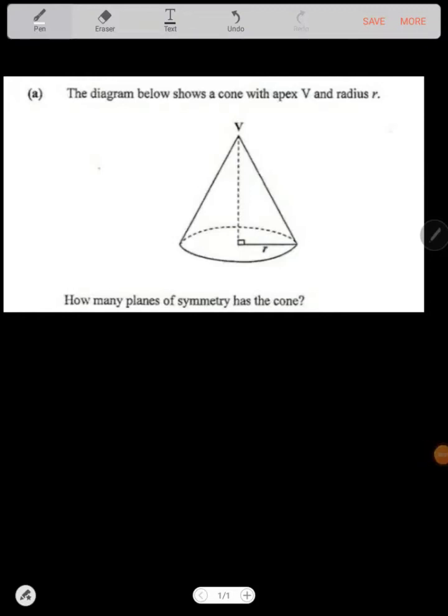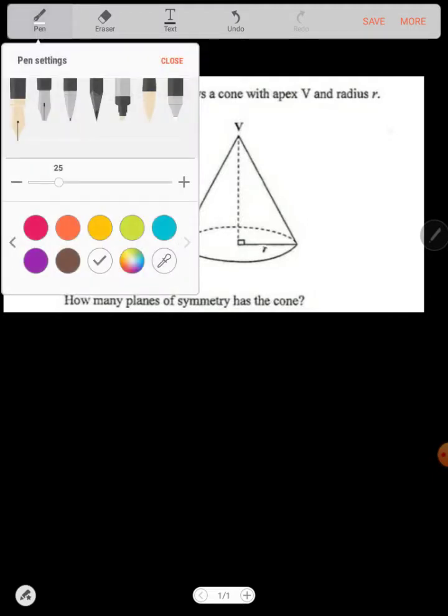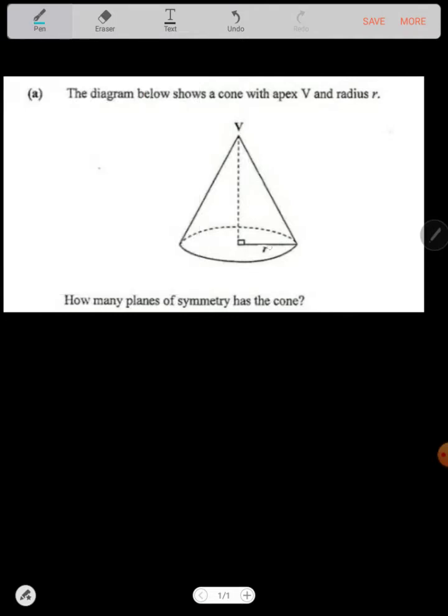We have the cone. This cone has a radius and it also has a height. The base is a circle, as you can see. Then they say, how many planes of symmetry has the cone? This is one thing that we need to consider.